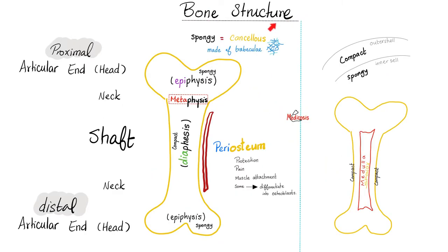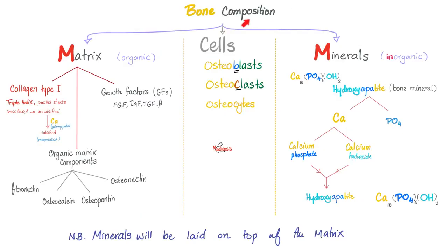We talked about the bone structure before — the diaphysis versus epiphysis, compact bone versus spongy or cancellous bone. And we talked about the periosteum with its functions in the previous video. The bone is made of matrix minerals and it contains cells.